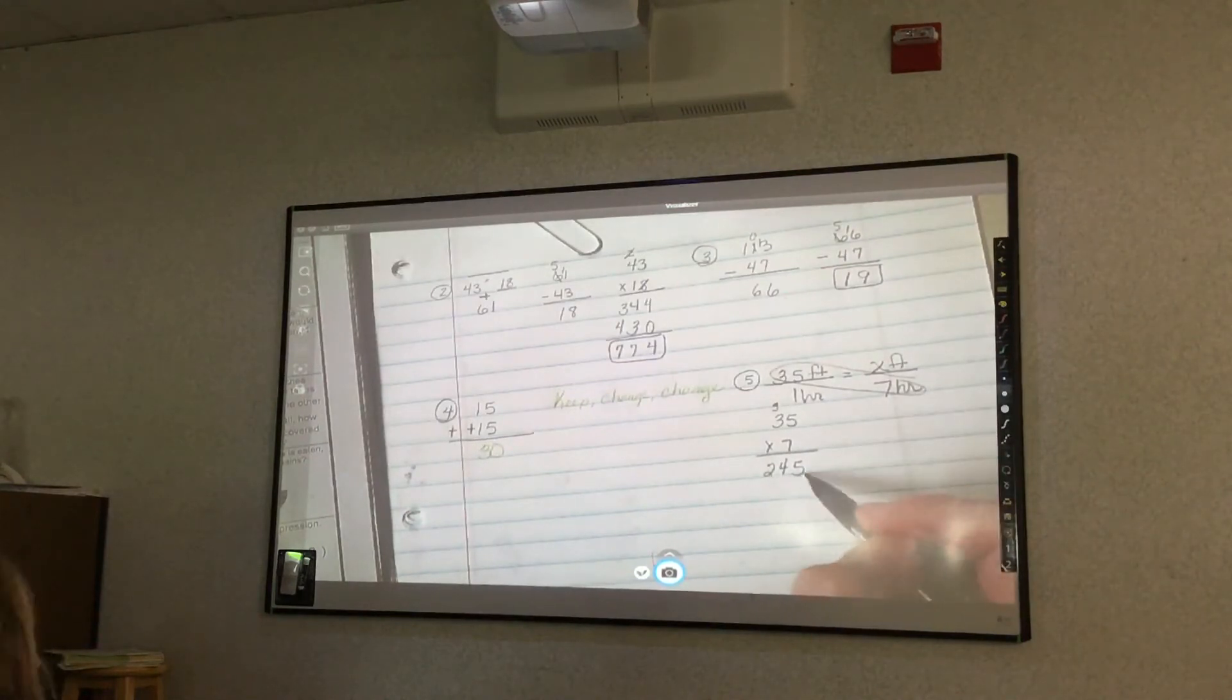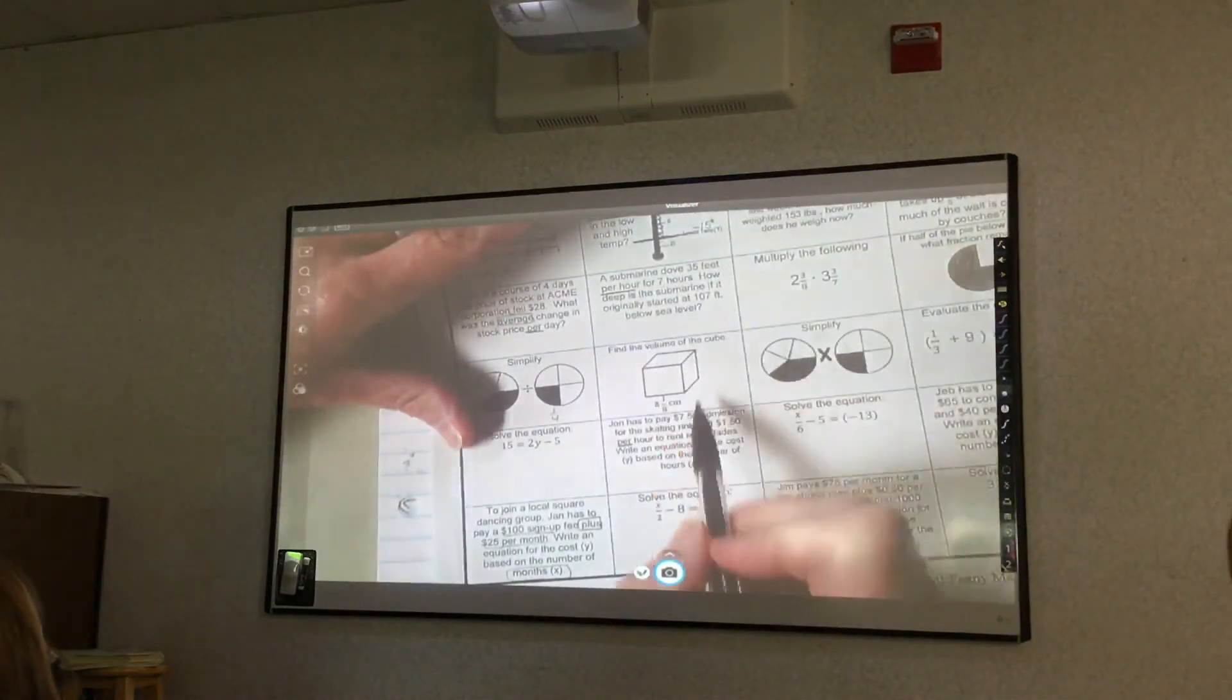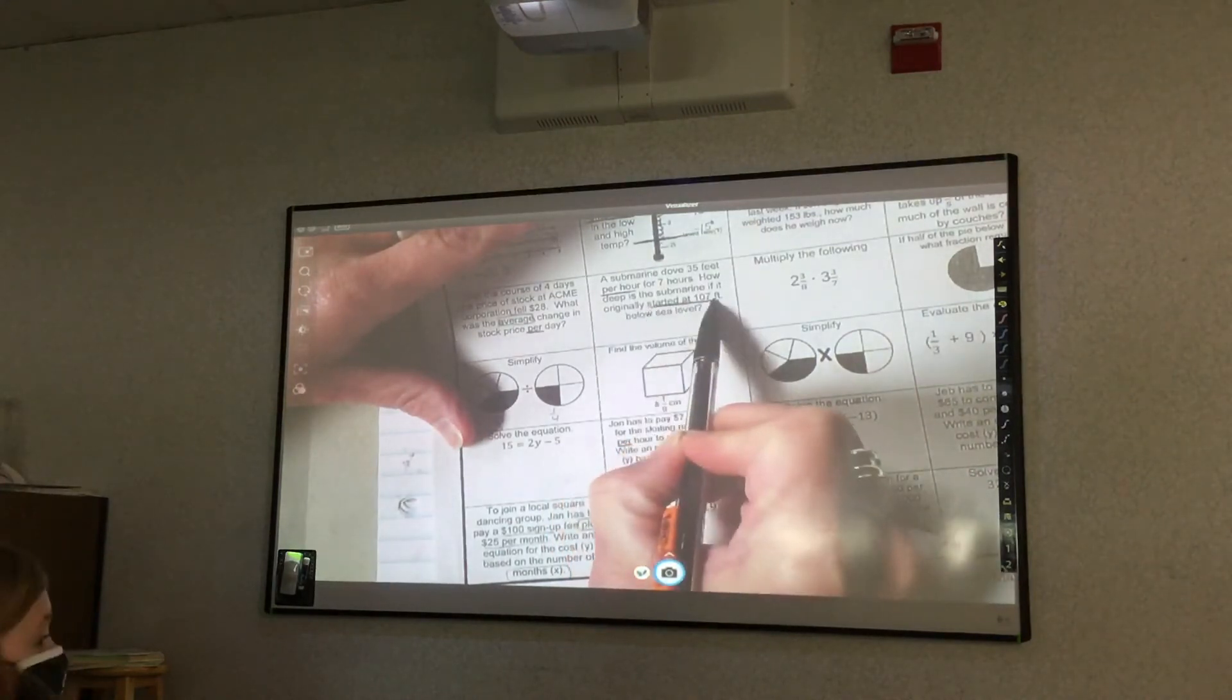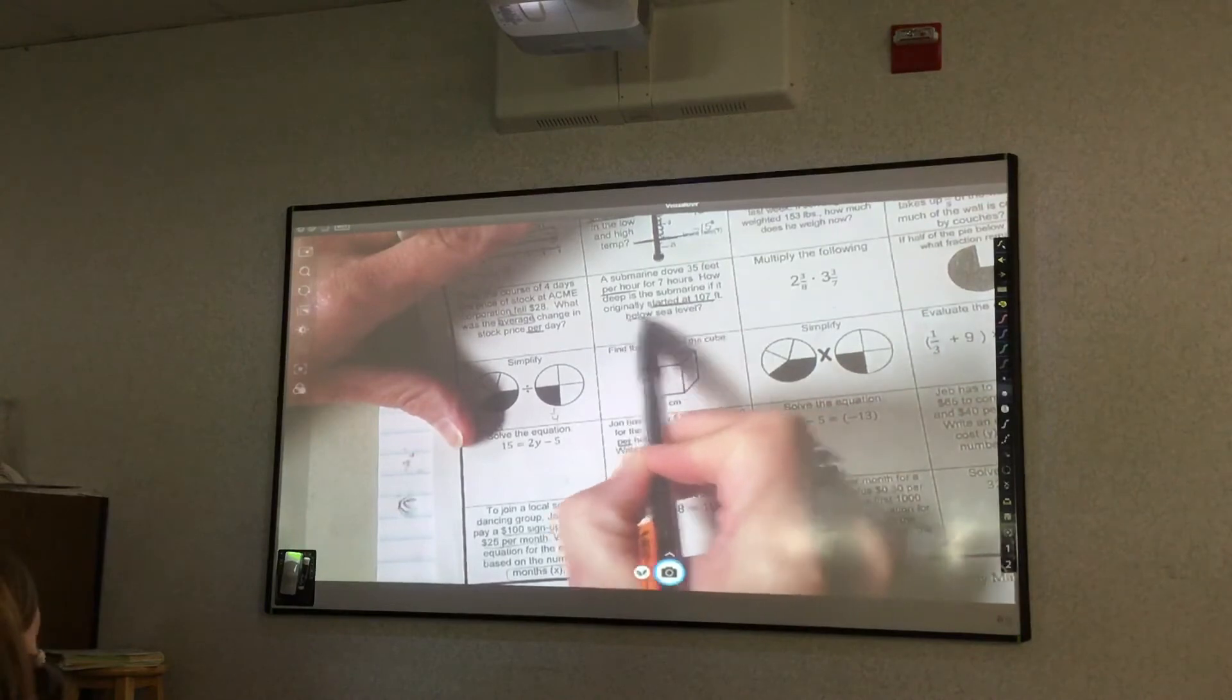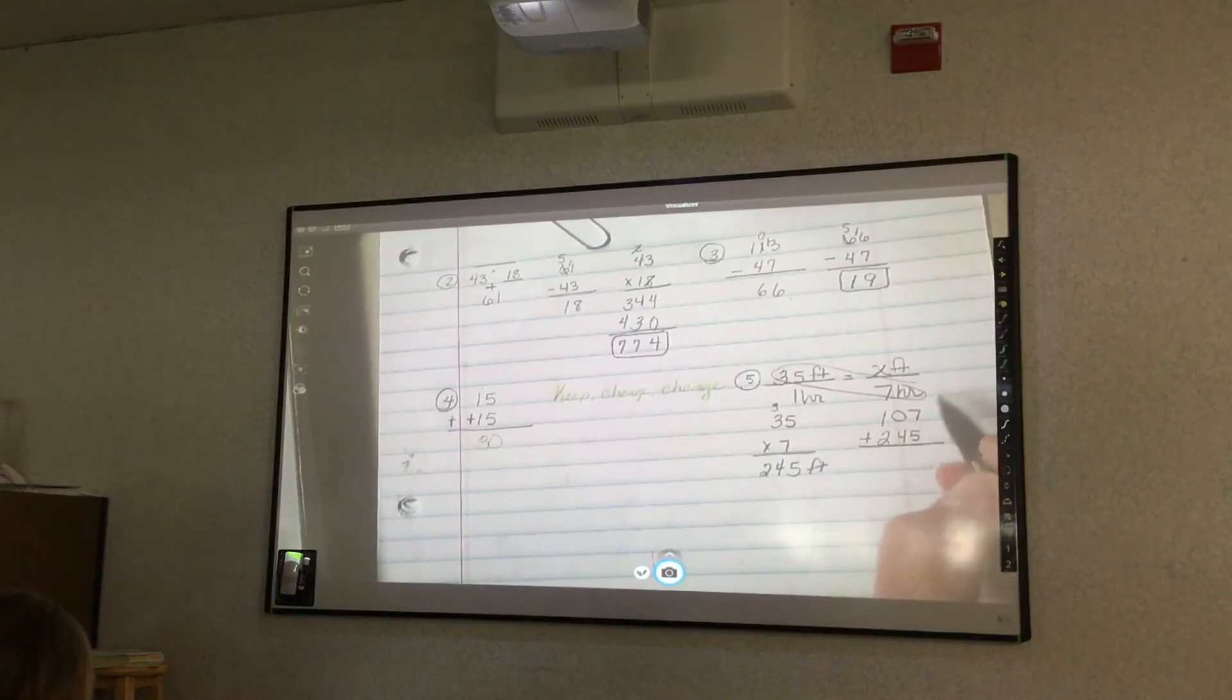So now that's 245 feet. But now let's go back to the story problem because this is another multi-step story problem because then it says how deep is a submarine if it originally started at 107 feet below sea level. So if I started at 107, I'm going to add my 245. So 7 plus 5 is 12. Leave the 2, carry the 1. 1 plus 4 is 5. And 1 plus 2 is 3. Now, what we're going to learn and what's going to carry over in today's lesson, they said that was below sea level. So it's really not a positive number. What would it be? Negative. Excellent. So we're just going to put that in there.